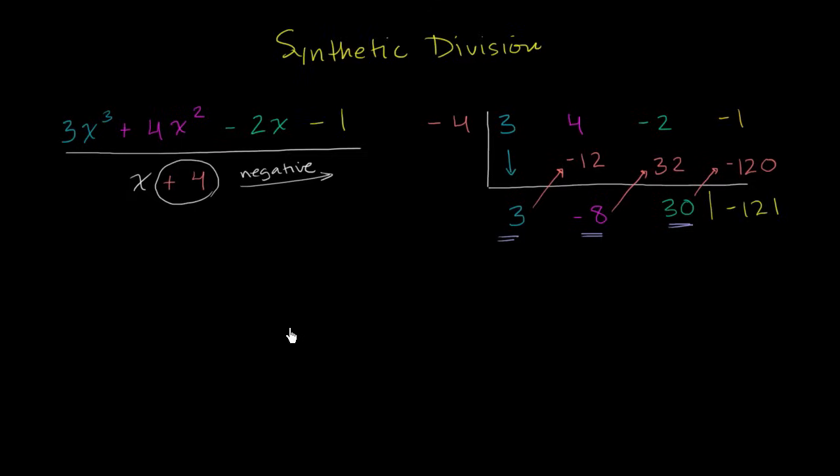So this is going to be equal to 3x squared minus 8x plus 30. And this right over here, you can view as the remainder. So minus 121 over x plus 4. This didn't divide perfectly. So over the x plus 4.